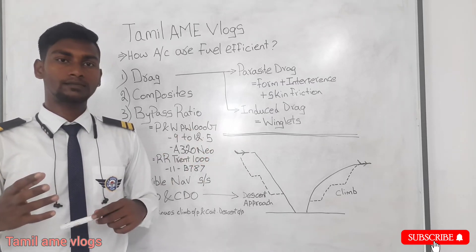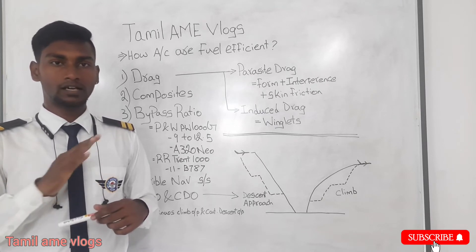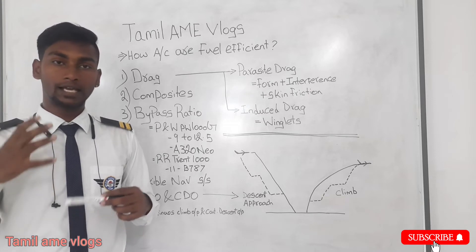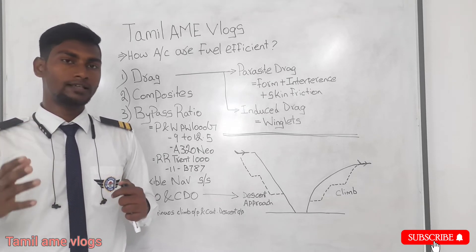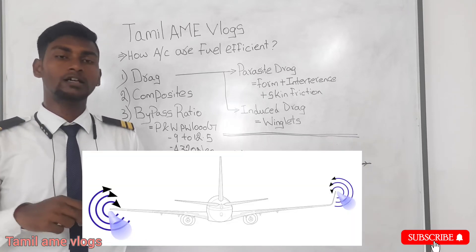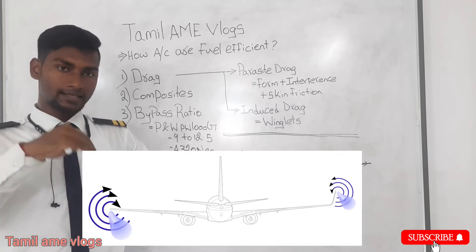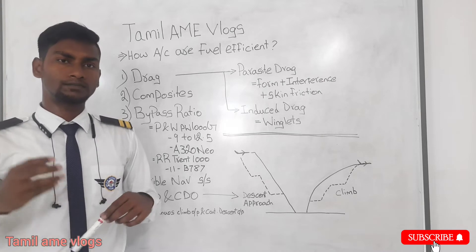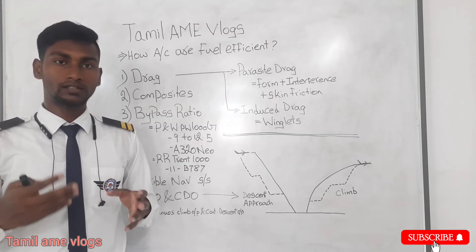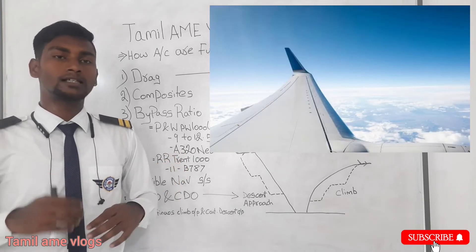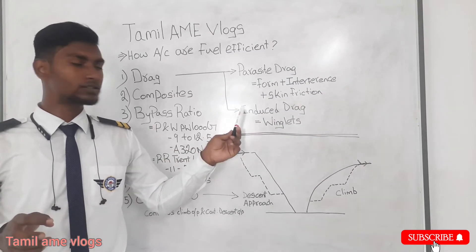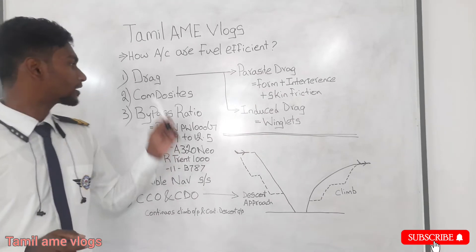Induced drag occurs only at the lifting time of the aircraft, meaning at takeoff — it is not applicable at high speed. At takeoff there is a high pressure difference in the wings: low pressure on the upper surface and high pressure on the lower surface. Air moves from high to low pressure, strikes the wing tip, pushes the wing tip down, and prevents the aircraft from lifting. To reduce induced drag, we implement a device called a winglet — a curved section at the wing tip that stops the upflowing air, eliminating induced drag and making the aircraft more fuel efficient.